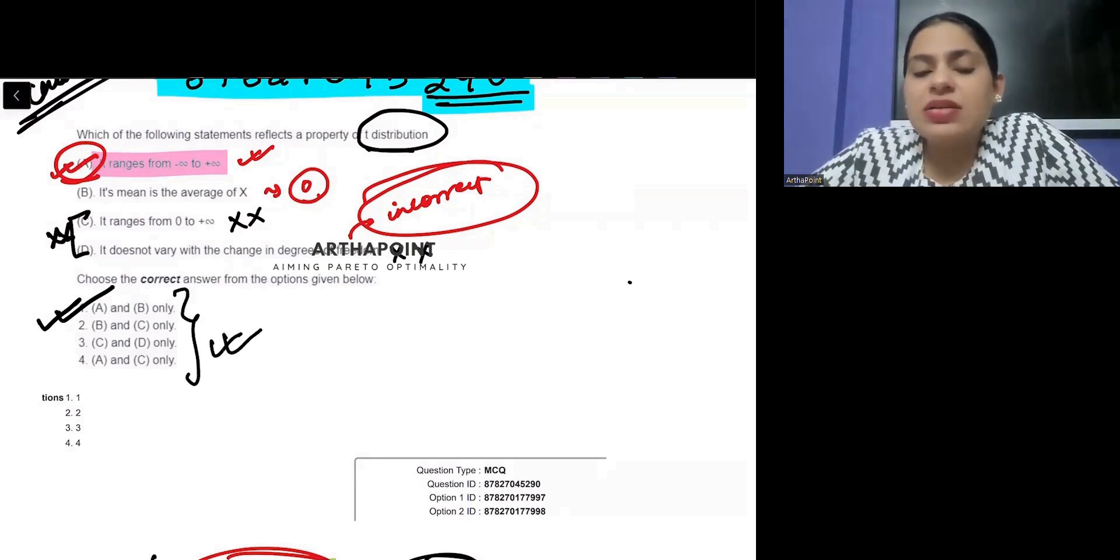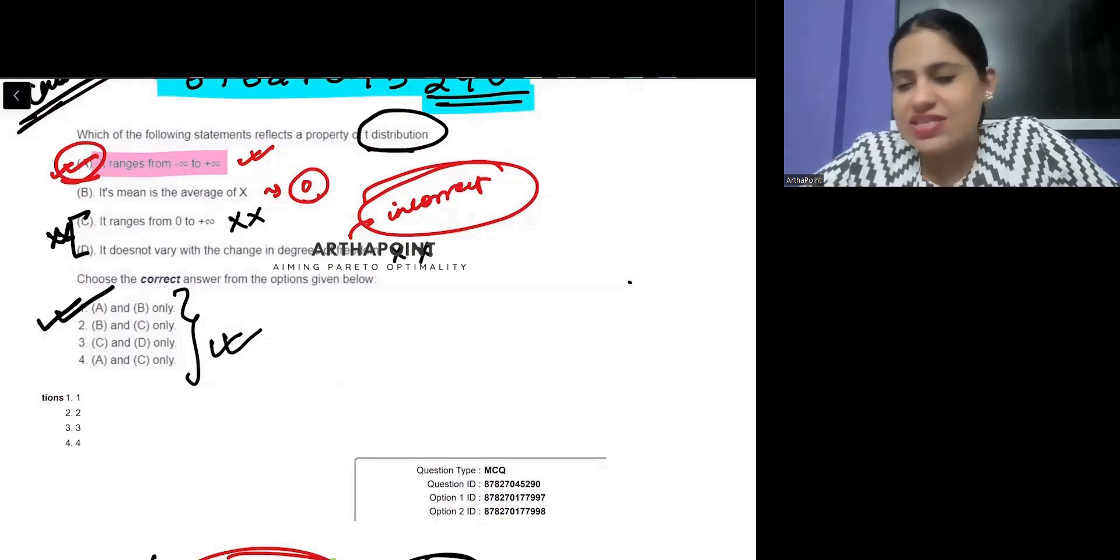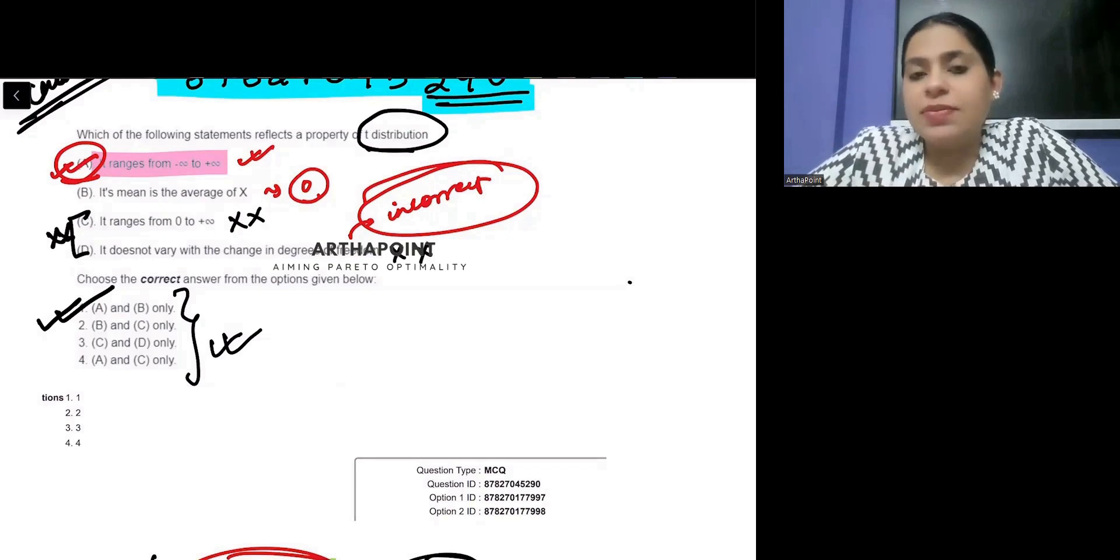Because it's mean is the average of x is not making sense. And if they don't drop this question, then it will be wrong. D is definitely incorrect. We can still go with one best fit option. But the question should be dropped.